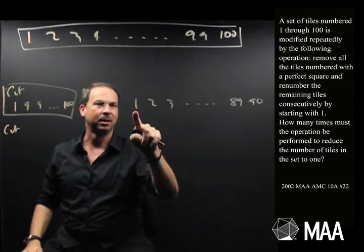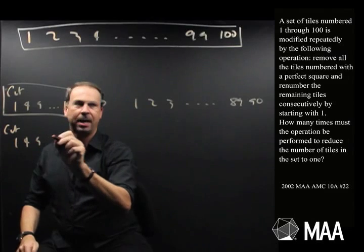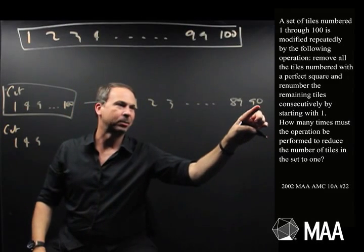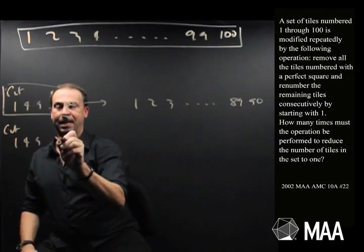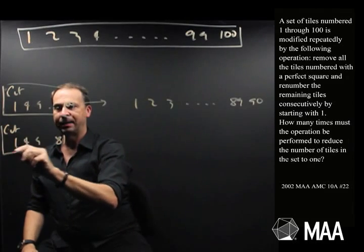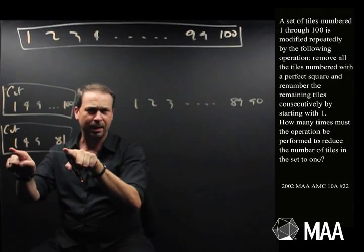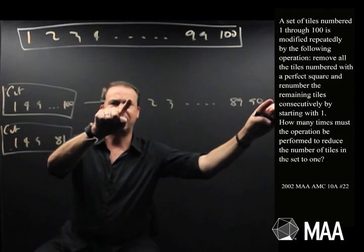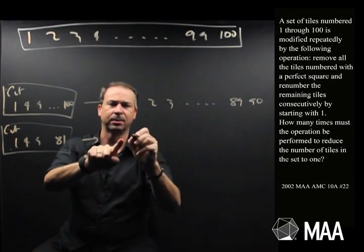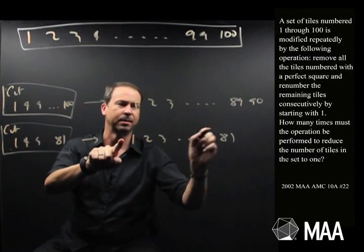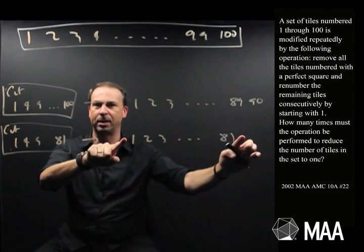The second time I'm going to cut the tiles 1, 4, 9, 16, up to what square number would I get up to? 81. That means I'm cutting 9 tiles. So I've got 90 tiles to begin with. Now I'm going to have 81 tiles numbered 1, 2, 3, up to 81. Step 2 leaves me with 81 tiles.